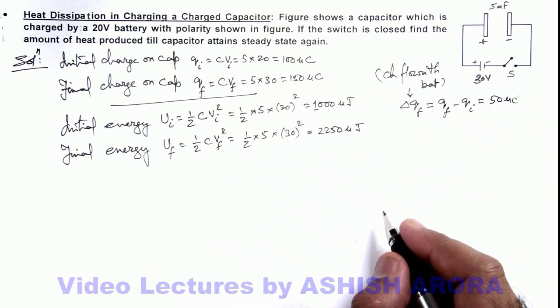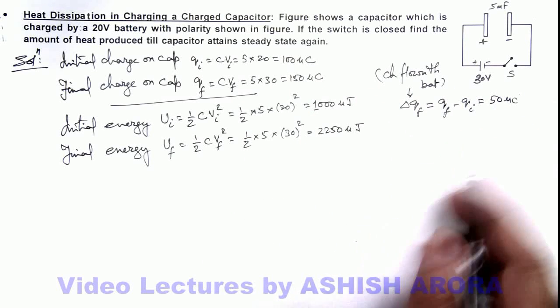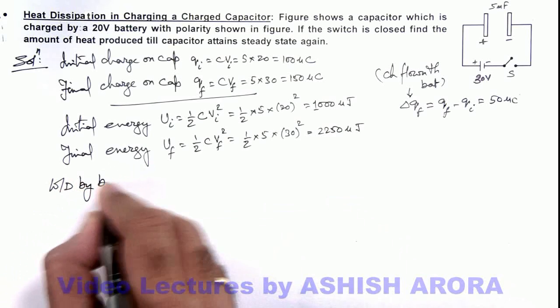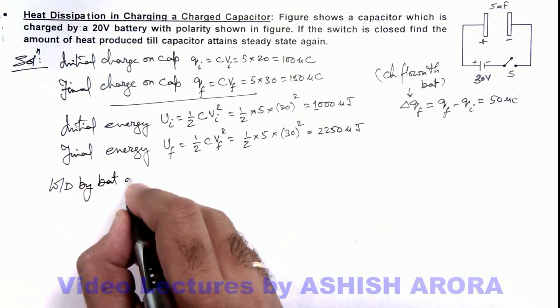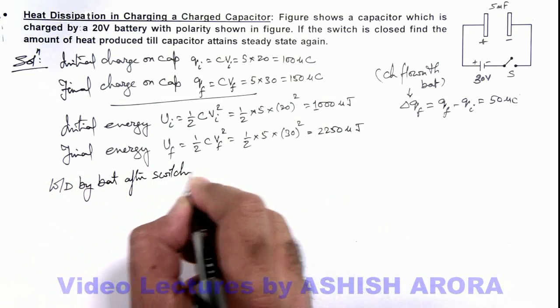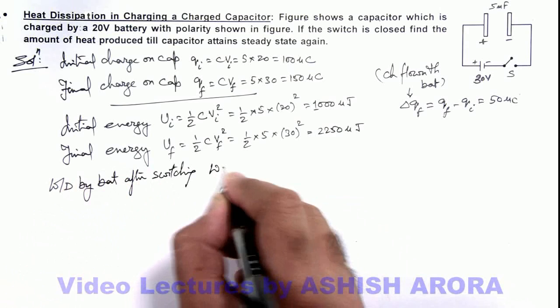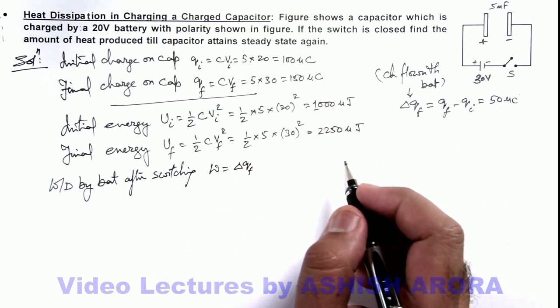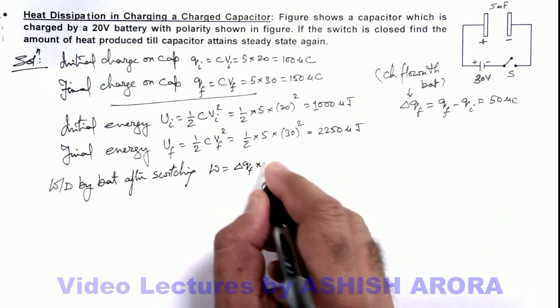Now if we calculate the work done by battery, you can now calculate work done by battery after switching. That can be written as ΔQ_f, which is flown through the battery, multiplied by the battery EMF.